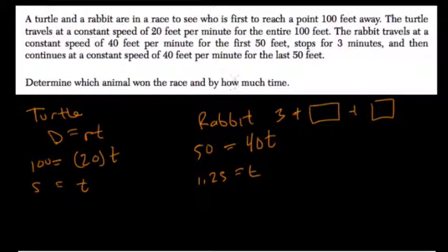That's the first leg, then the 3 minute rest, then 40 feet per minute for the last 50 feet. So it's 40 feet per minute, 40 times T equals 50. So again, it's 1.25.